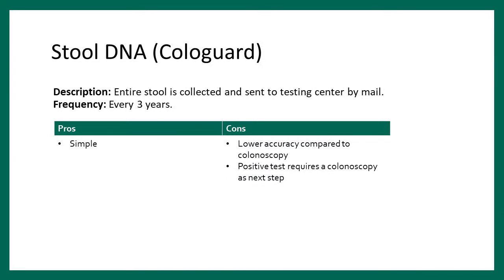Stool DNA testing — you may have heard of Cologuard, advertised on radio and television. You collect the entire stool and send it to the laboratory by mail; it's done every three years. Sensitivity and specificity are slightly better than FIT. This test detects abnormal DNA shed from colon cells. It actually relies more on fecal occult blood than DNA, but the combination improves accuracy. A positive test still requires colonoscopy, and it's done every three years.